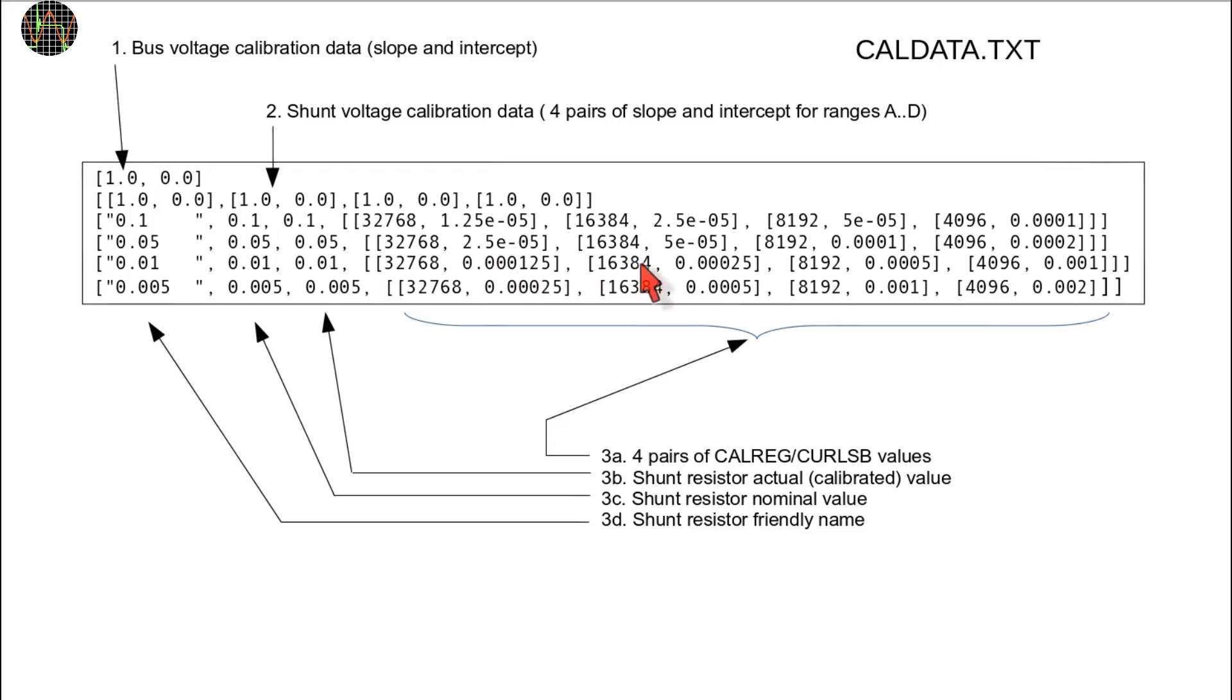Another time saving thing you could do is just performing the shunt voltage calibration for range D and then edit the Cal-Data text file by hand to copy the D range slope and intercept values by hand into the positions for range A, B and C.